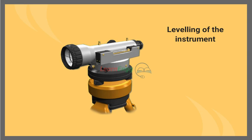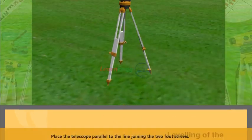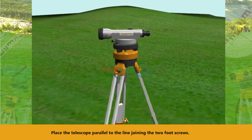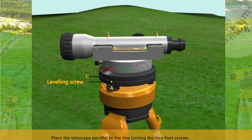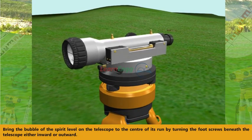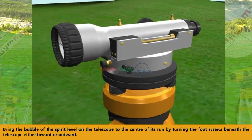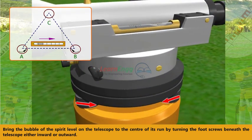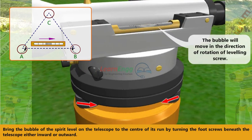Leveling of the instrument. Place the telescope parallel to the line joining the two foot screws. Bring the bubble of the spirit level on the telescope to the center of its run by turning the foot screws beneath the telescope either inward or outward.